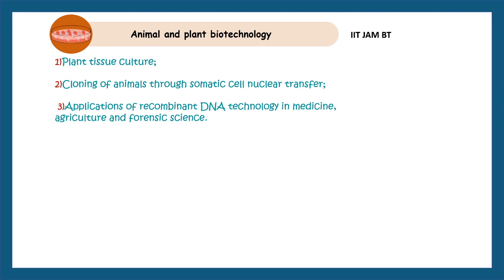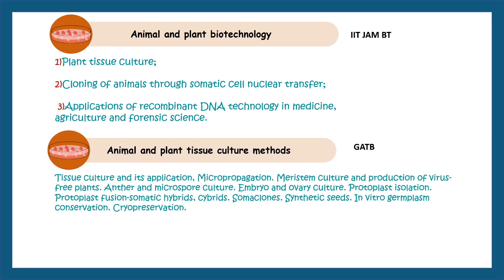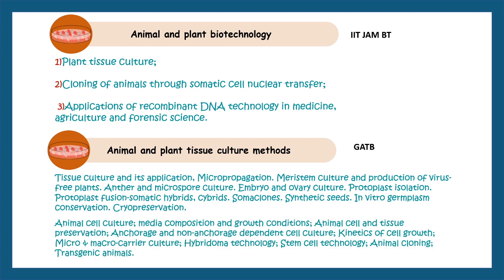Now let us talk about the topics. This topic is incorporated newly in the syllabus. It involves plant tissue culture, cloning of animals through somatic nuclear transfer, and application of recombinant DNA technology in medicine, agriculture, and forensic sciences. These are the overall headings for the biotechnology part newly incorporated in the IIT JAM syllabus. Similar topics were incorporated in the GAT-B syllabus very recently, so this is not irrelevant — it makes a lot of sense. GAT-B syllabus is more elaborated, but IIT JAM BT gives only broad headings, so we can prepare for both exams in the same go.